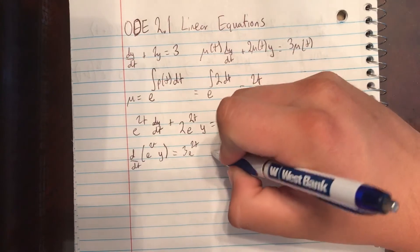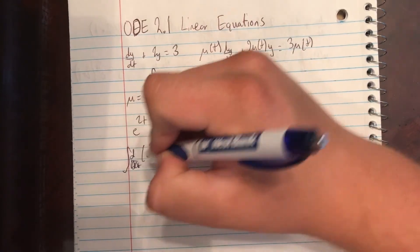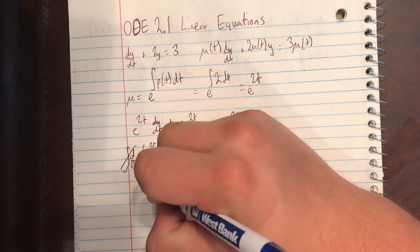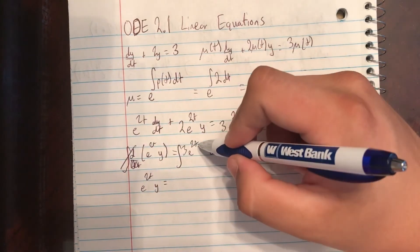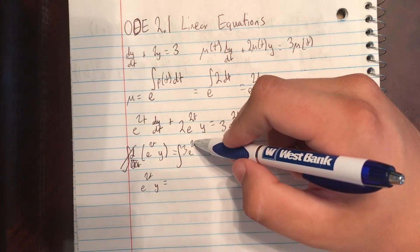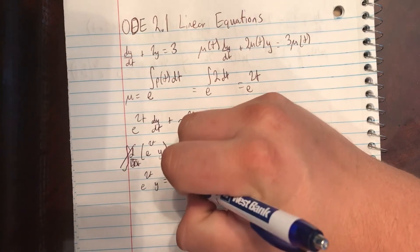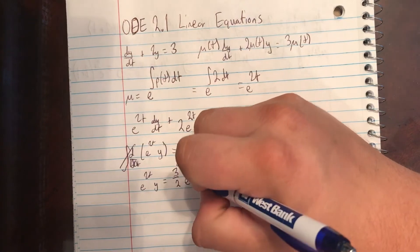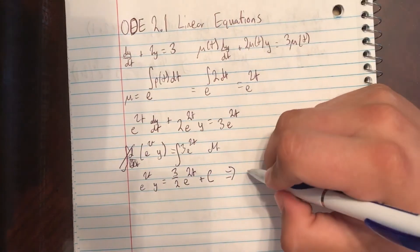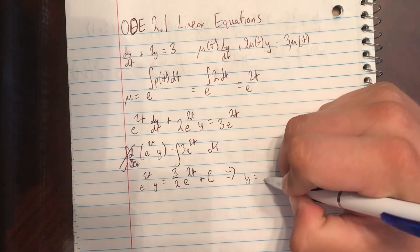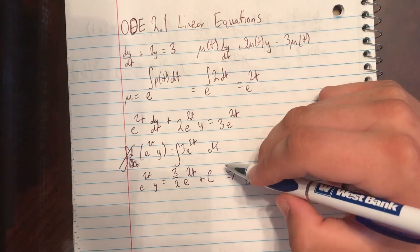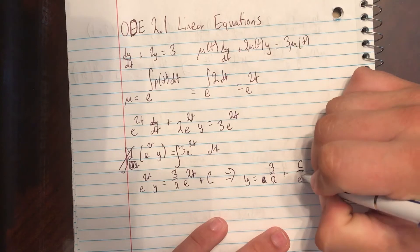We can move the dt over to this side. We'll take the integral of both sides. Integral and derivative cancel. So we're going to have e to the 2t times y is equal to the integral of 3e to the 2t dt. The negative 2 will go into the denominator, so it's going to be 3 over 2 times e to the 2t plus c. And then we can move the e to the 2t over, and the e to the 2t's cancel, plus c over e to the 2t.